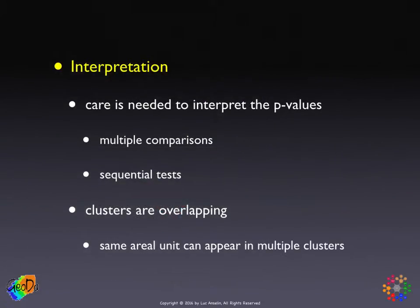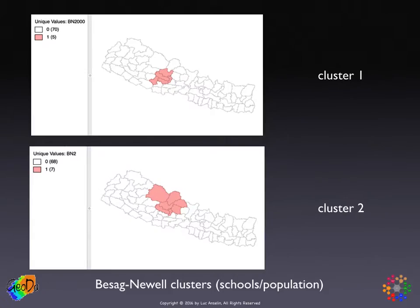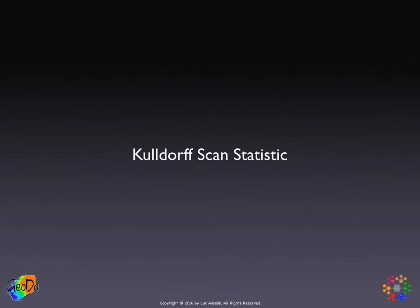This is not always easy to interpret. The p-values themselves, just like with any local statistic, are suspect — there are multiple comparisons and sequential tests, so be very careful. Typically one only uses the most significant or first two most significant clusters. A second issue is that clusters are often overlapping, in the sense that the same unit can appear in multiple clusters. In the Nepal example, some central districts appear in both cluster one and cluster two.